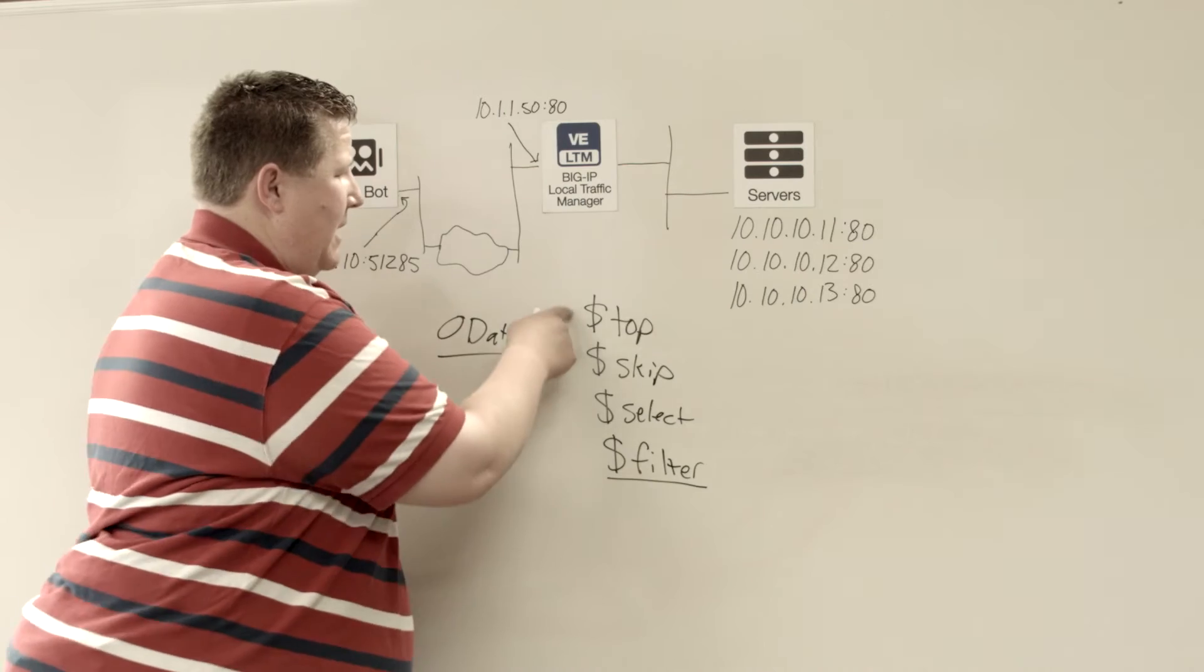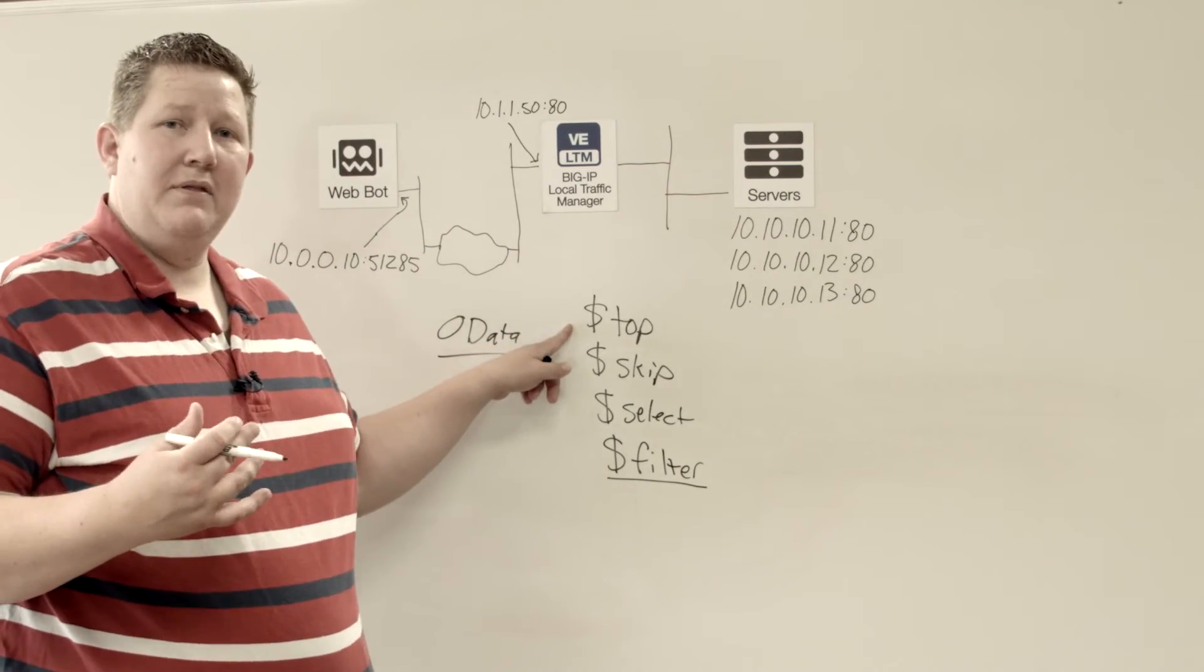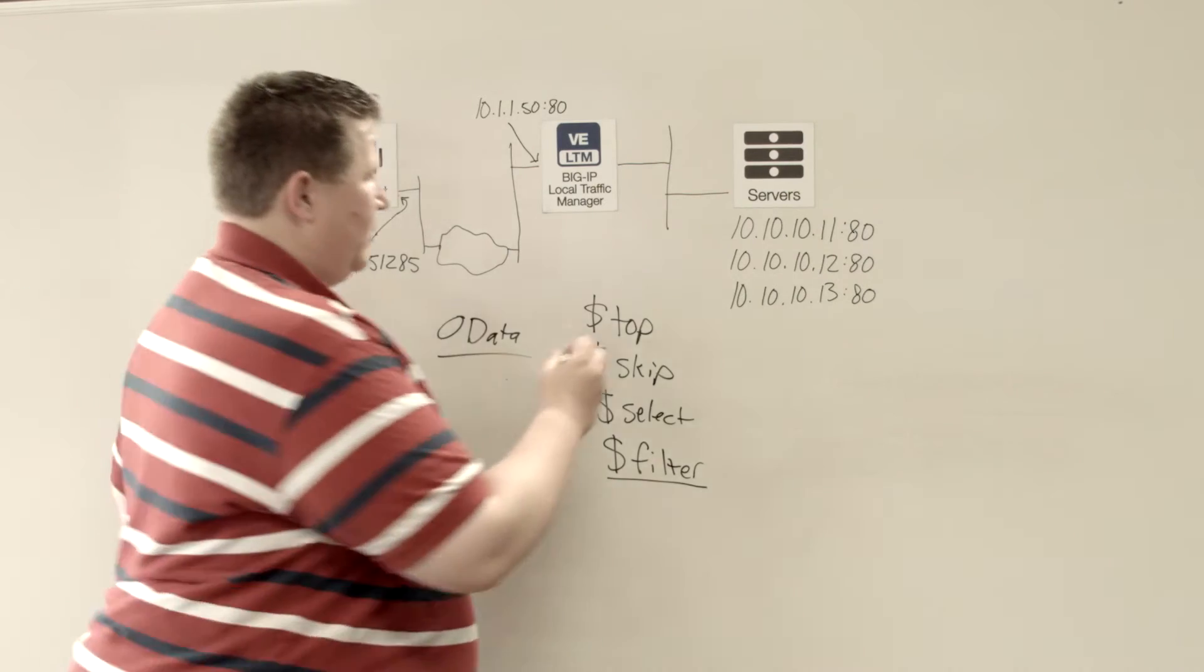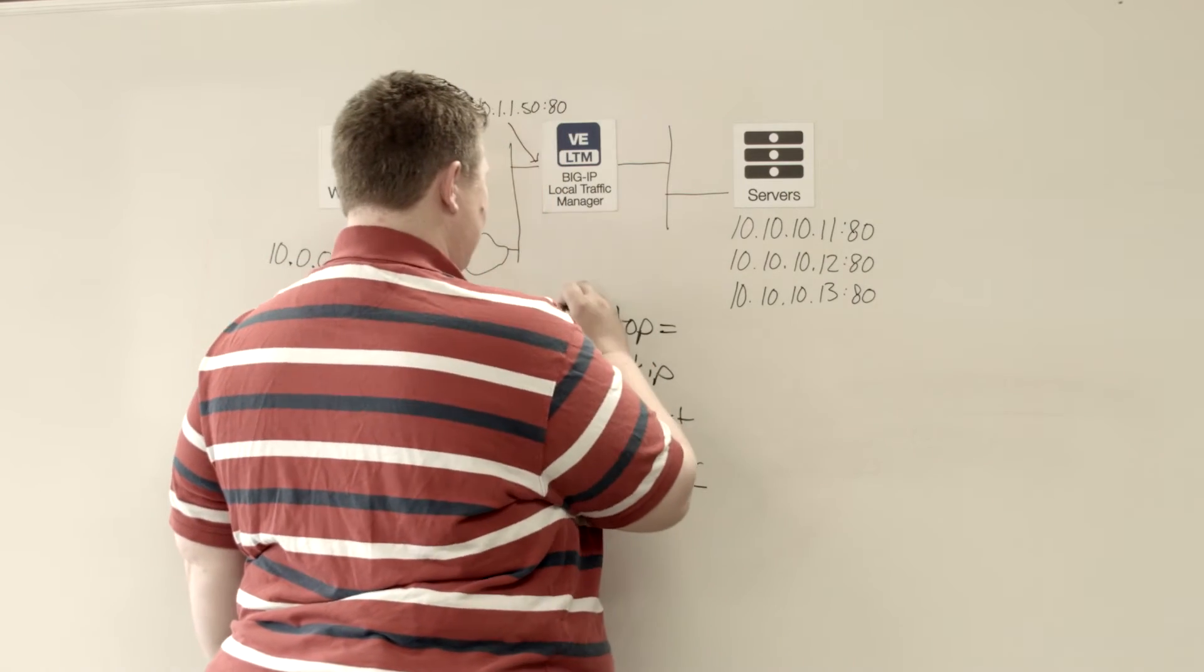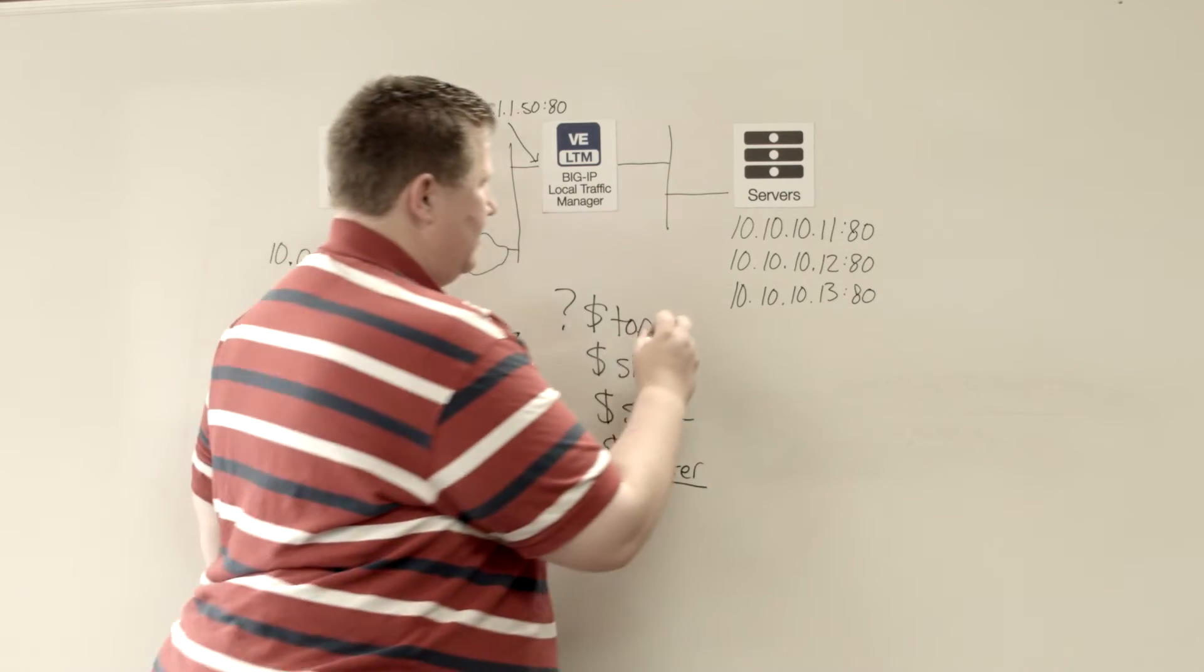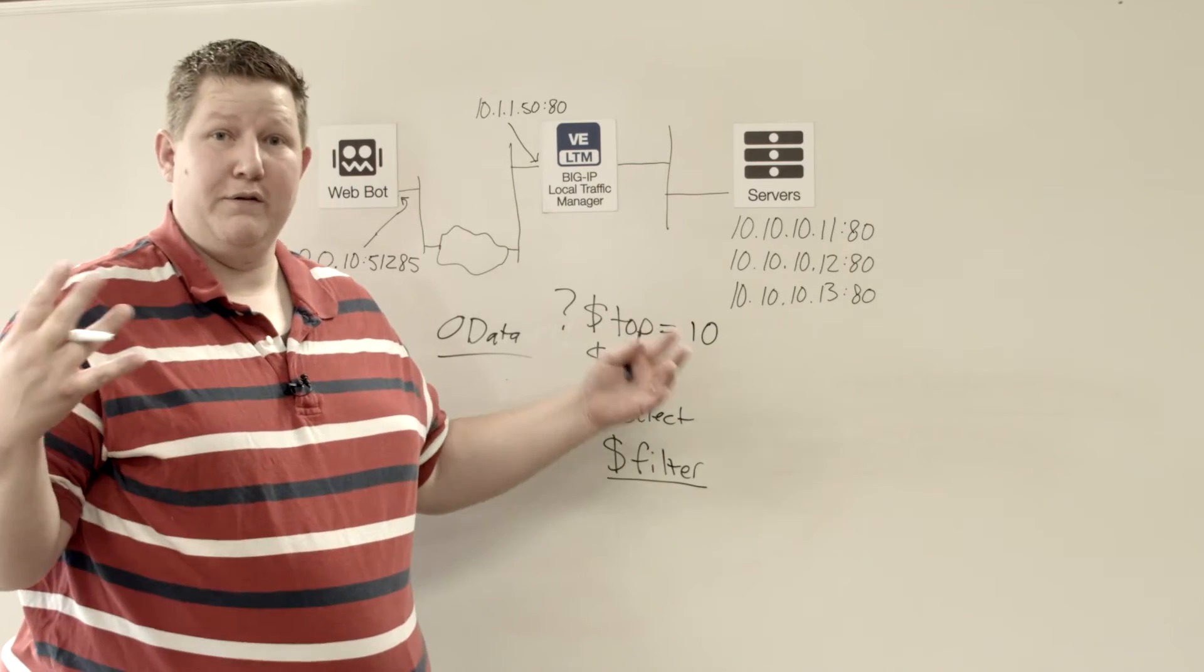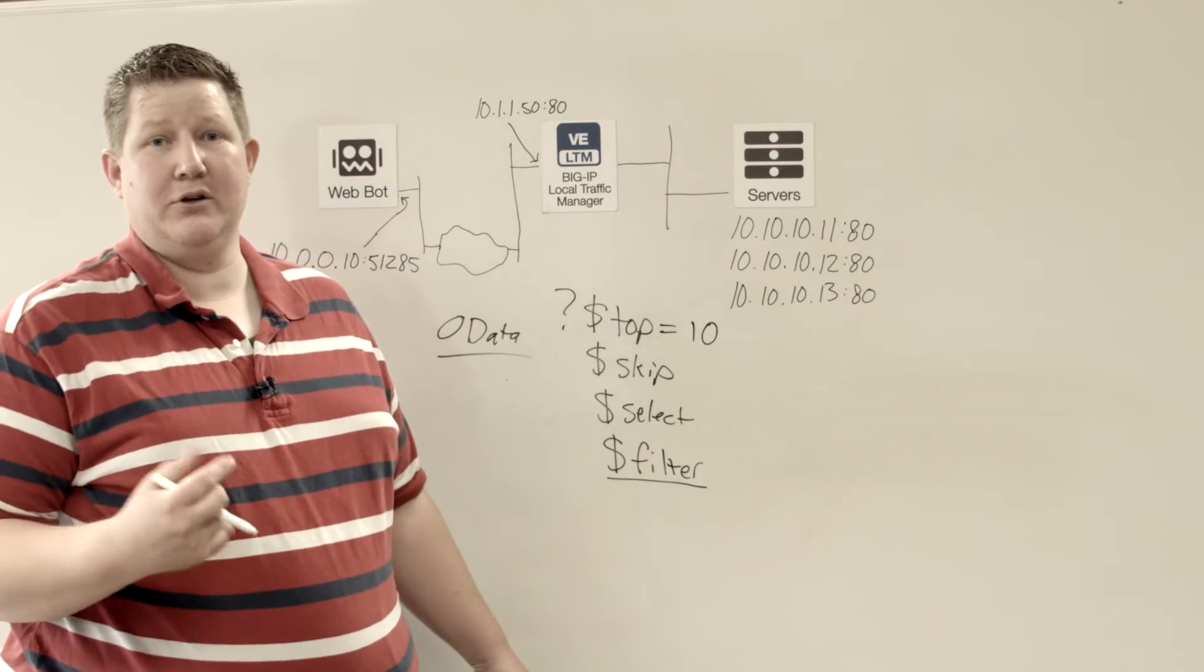For top and skip, this is to page through data. And so if you specify top, then it's going to return, so you would do top equals, you've got your question mark, top equals 10. And what that's going to do is it's going to return the top 10, or the first 10 of that collection of results.